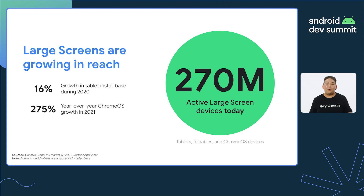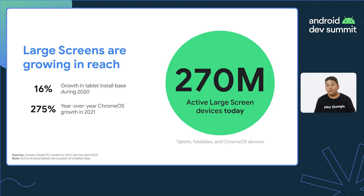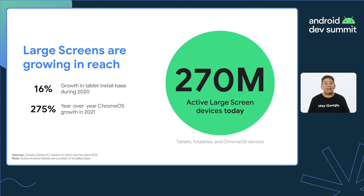With more than a quarter billion large screen Android devices today, it's more important now than ever to ensure your application runs well on large screens. Starting with Android 12L feature drop and building onto it with Android 13, Android makes it easier to multitask and interact with your app in ways beyond the traditional portrait-oriented phone experience we're all too familiar with.